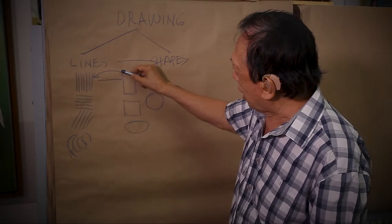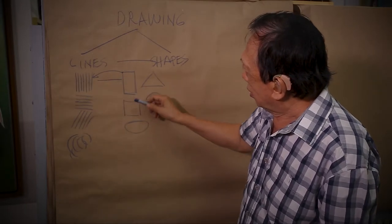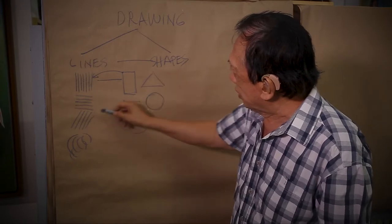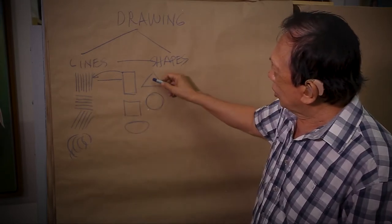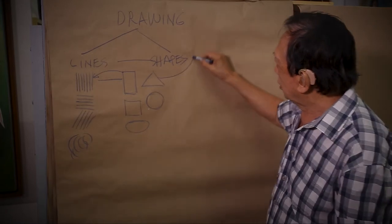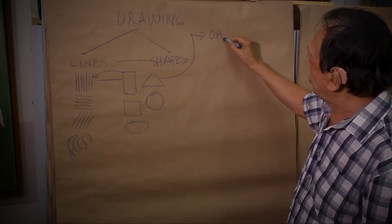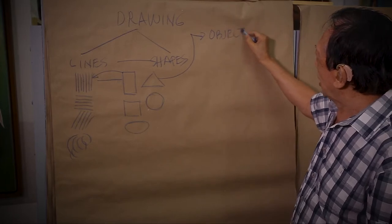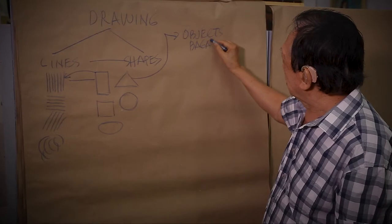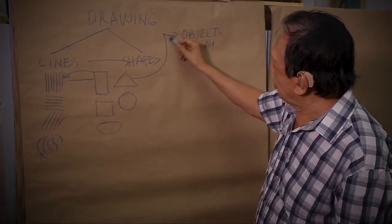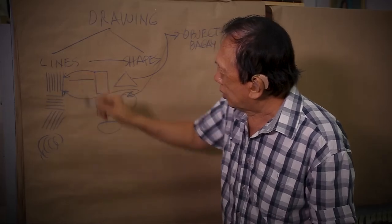Halimbawa, itong rectangle - ginagamit natin vertical at horizontal. Yung triangle, ginagamit natin diagonal at saka horizontal. Kung marunong ka mag-drawing ng mga shapes, madudrawing mo na rin yung mga objects o yung mga bagay. Kasi ang bawat objects ay gumagamit ng mga shapes, at ang bawat shapes ay gumagamit ng mga lines.